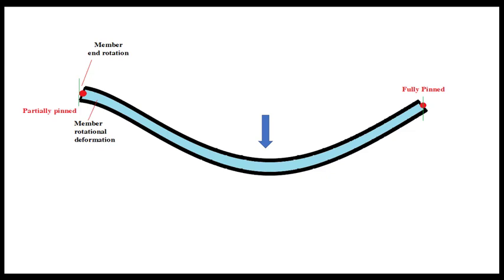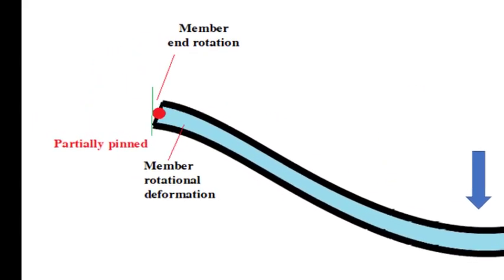So here some proportion of moment is developed at the end with respect to the moment that would have developed if the ends were fixed. So this is the partial moment and the partial moment that develops depends on the rotational deformation the section undergoes.